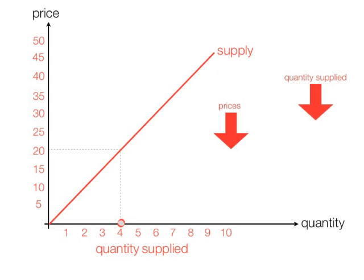So we say prices and quantity supplied move in the same direction, and the relationship is direct.